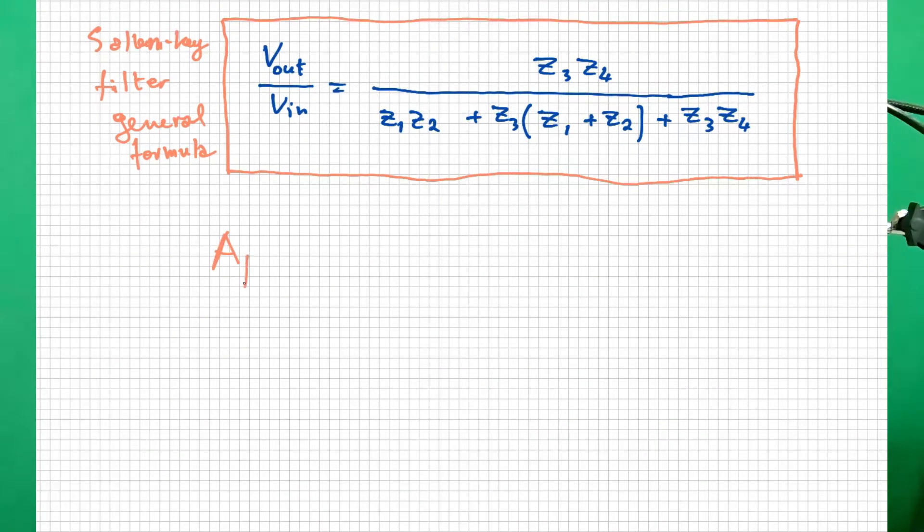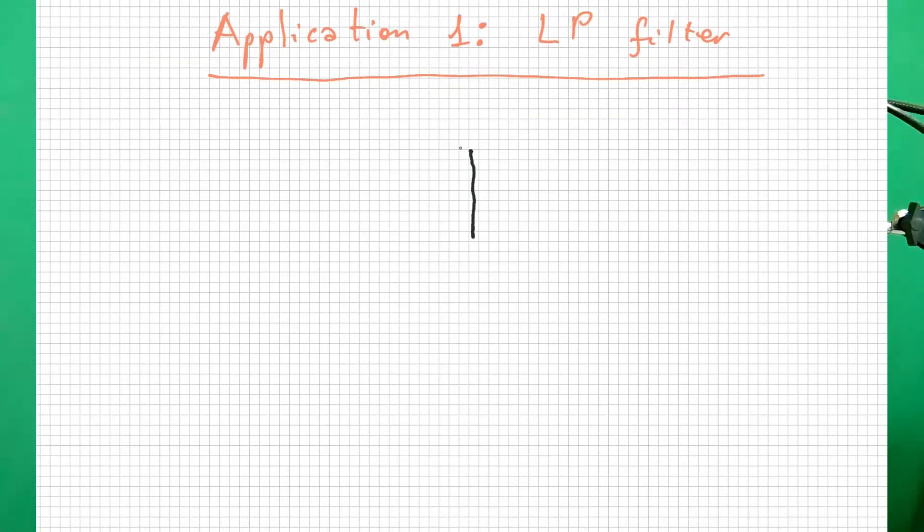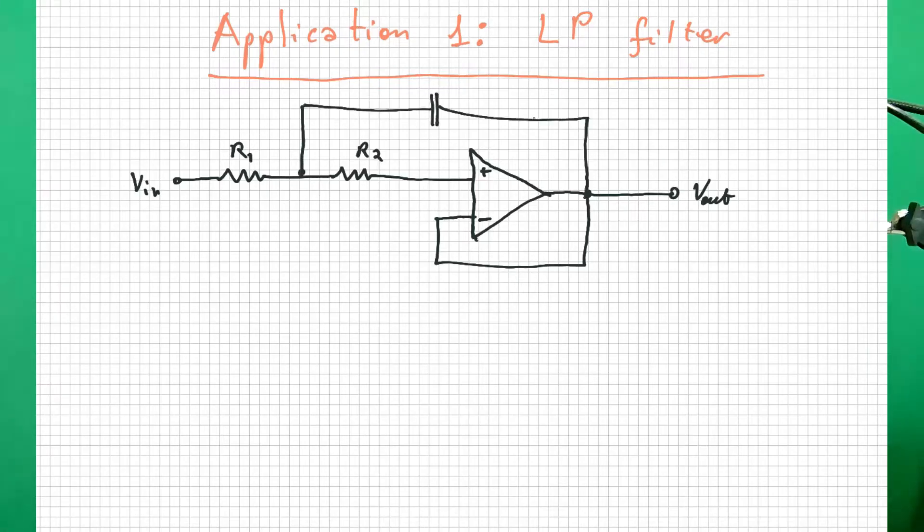The Sallen-Key low-pass filter is obtained by replacing the four impedances with appropriate resistors and capacitors. In particular, we will replace Z1 with a resistor R1, Z2 with a resistor R2, Z3 with a capacitor C1, and Z4 with a capacitor C2, obtaining this new circuit.